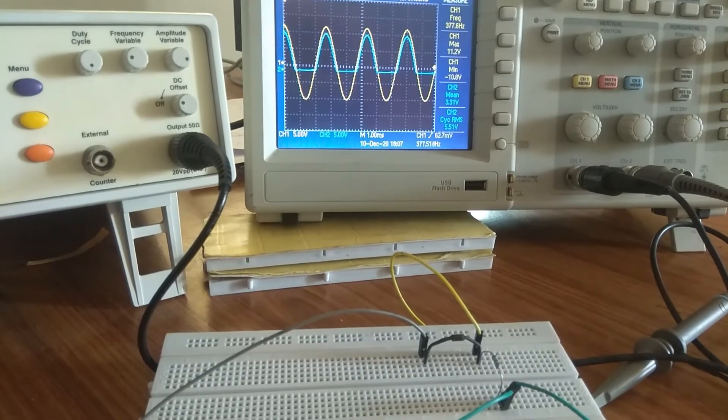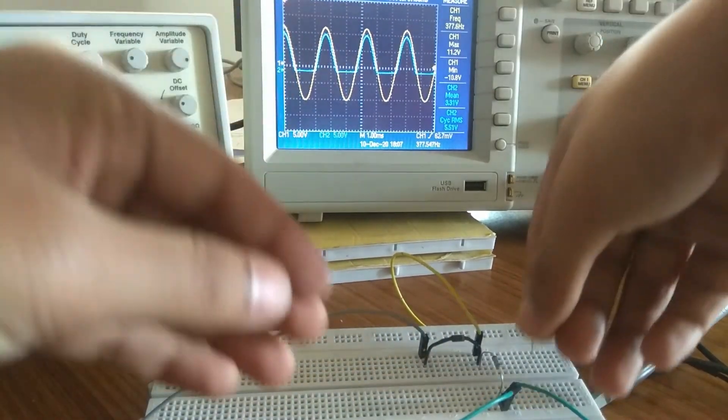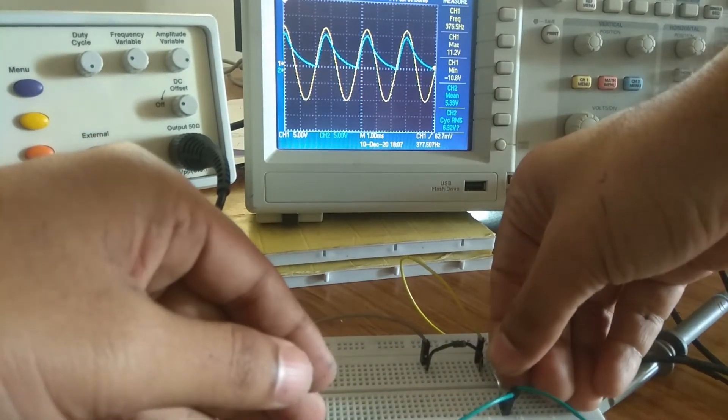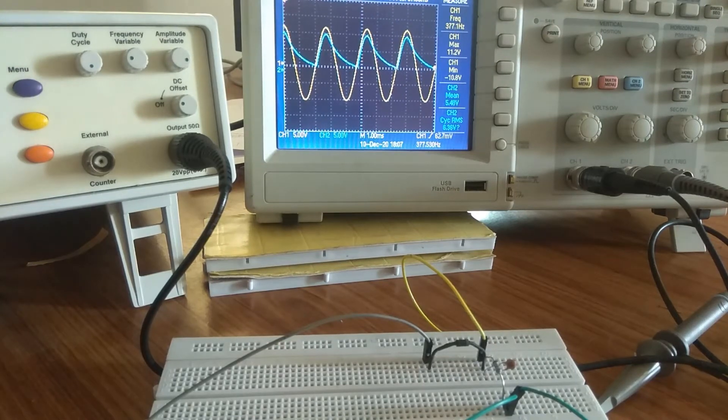This is the output with the normal diode and your resistance. Now I am going to connect the capacitance across this one. The output is going to change. This is the output that we are going to get. It is trying to come to the DC.